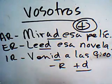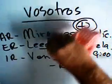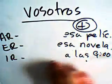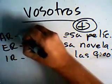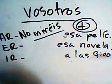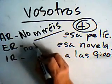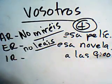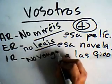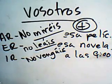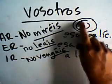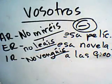To make vosotros commands negative, as with the tú form, we're back to the present subjunctive with a negative word: no miréis (present subjunctive), no leáis (present subjunctive), no vengáis a las nueve. So the only thing that's different are the affirmative commands — in the negative, we're back to the present subjunctive.